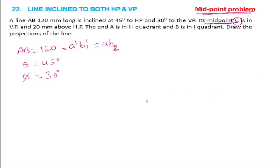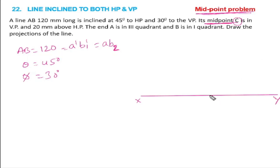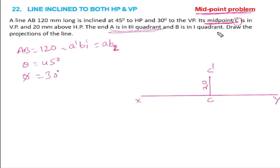First, let us draw the XY reference line. End A is in the third quadrant — this is an important point. End B is in the first quadrant, so the front view and top view projections apply accordingly.